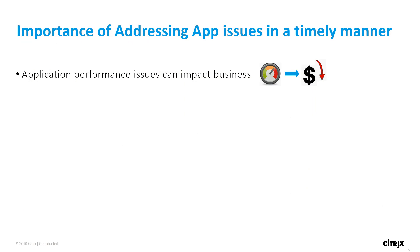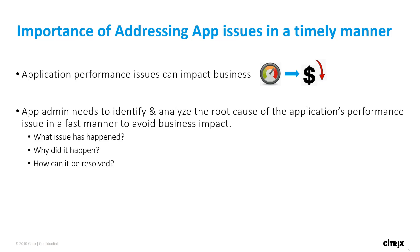An application performance issue can impact business negatively — a low performing application can lead to business loss. Hence, it is very essential that an app admin identifies the application performance issue and reaches the root cause in a timely manner. He needs to answer three questions: What issue happened? Why did it happen? And how can it be resolved quickly?